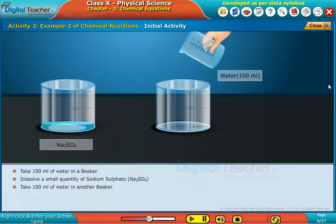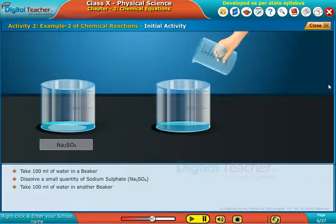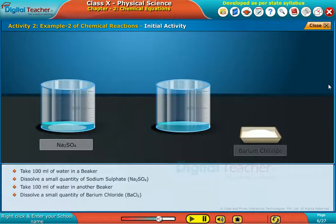Take 100 ml of water in another beaker. Dissolve a small quantity of barium chloride, BaCl2.